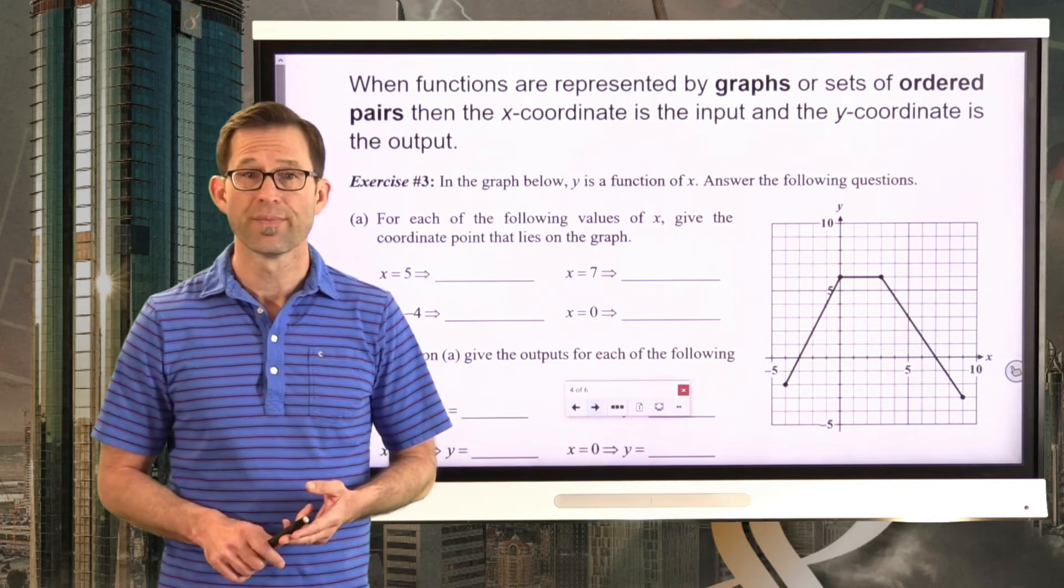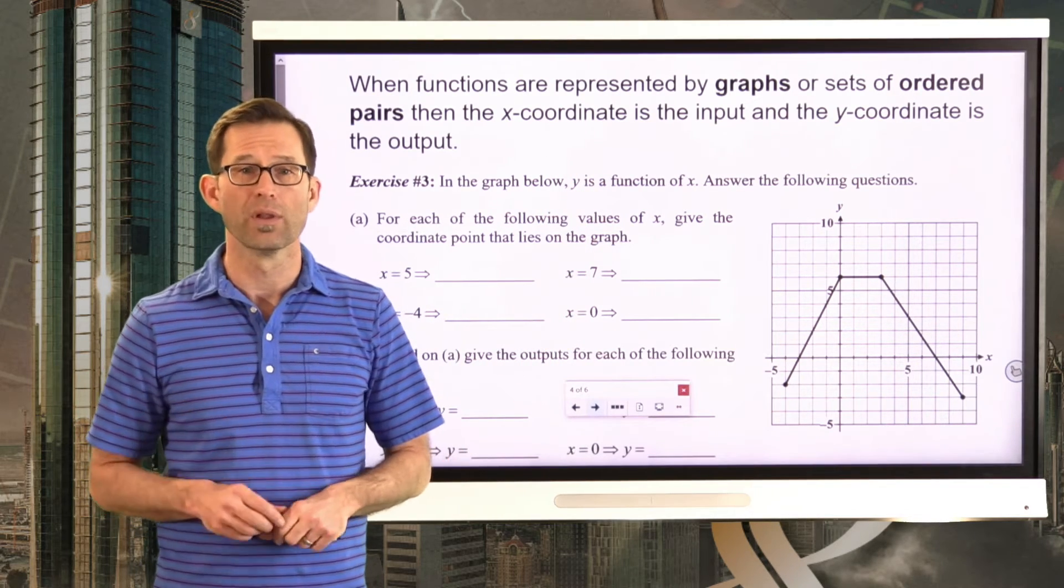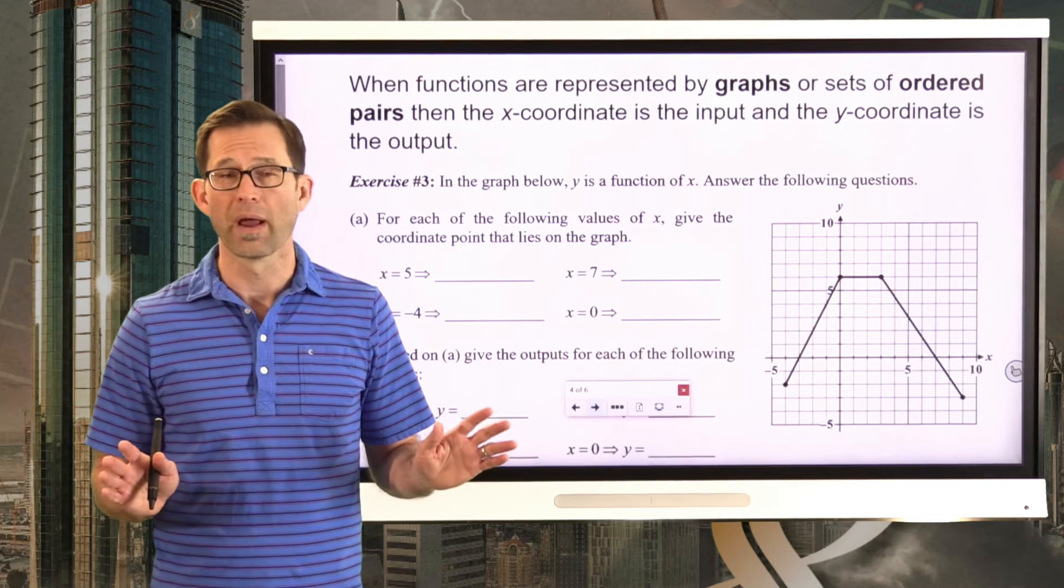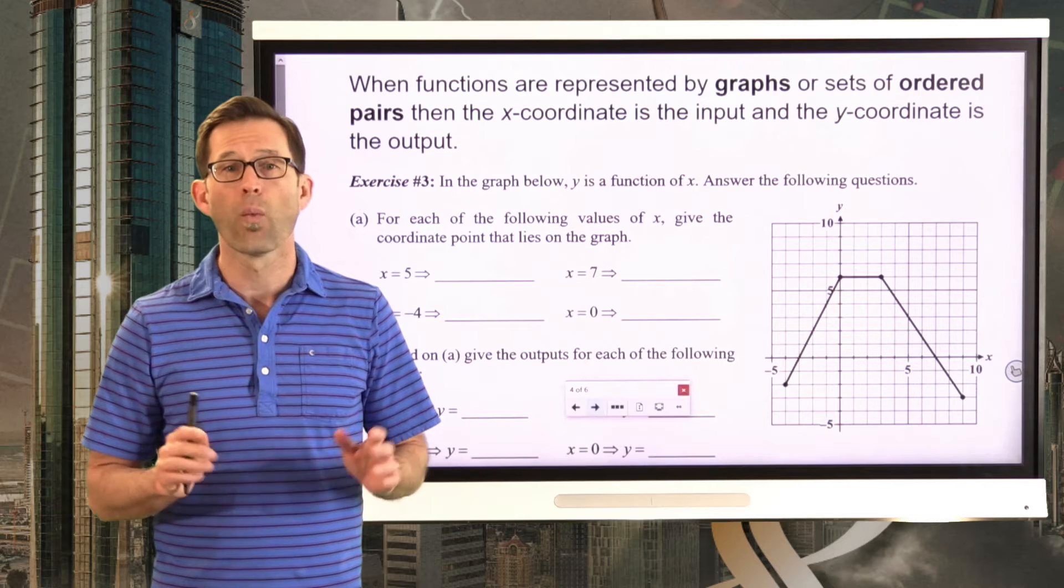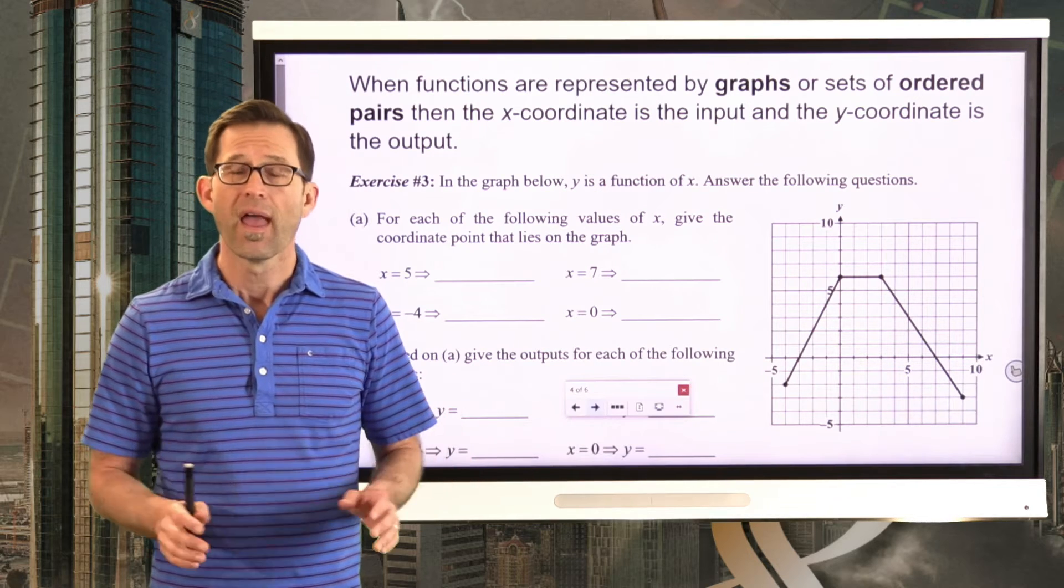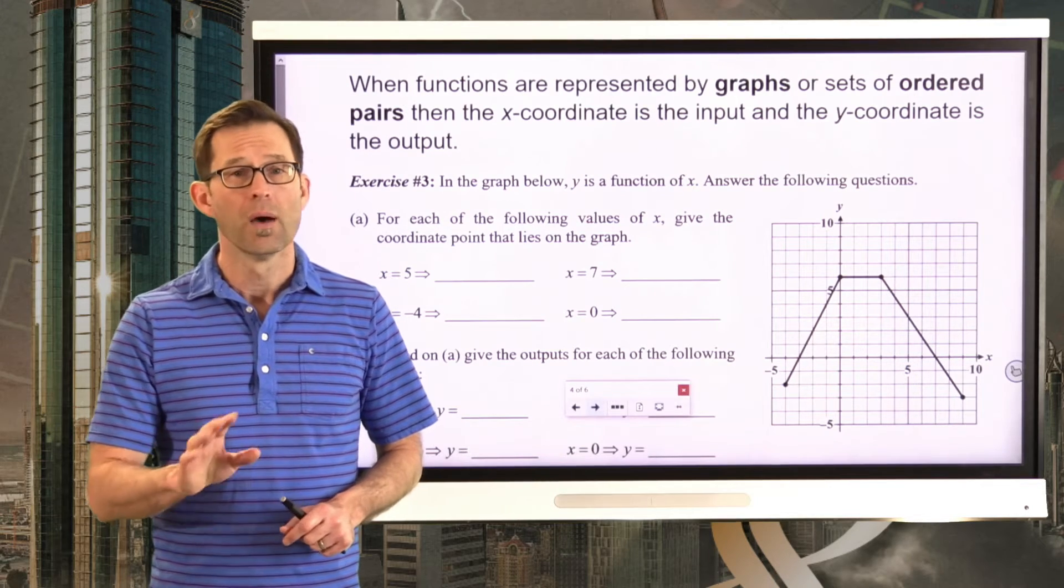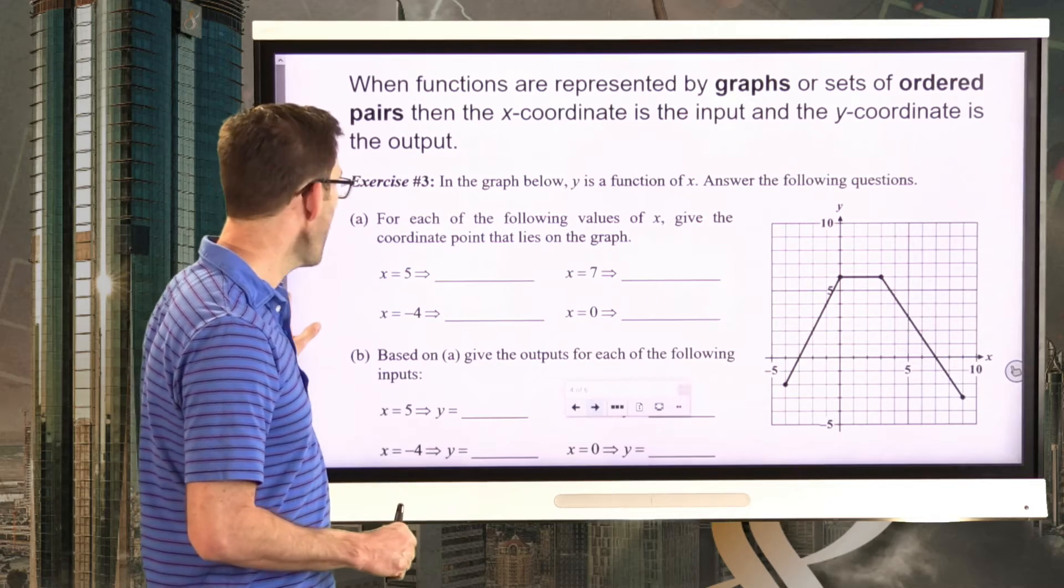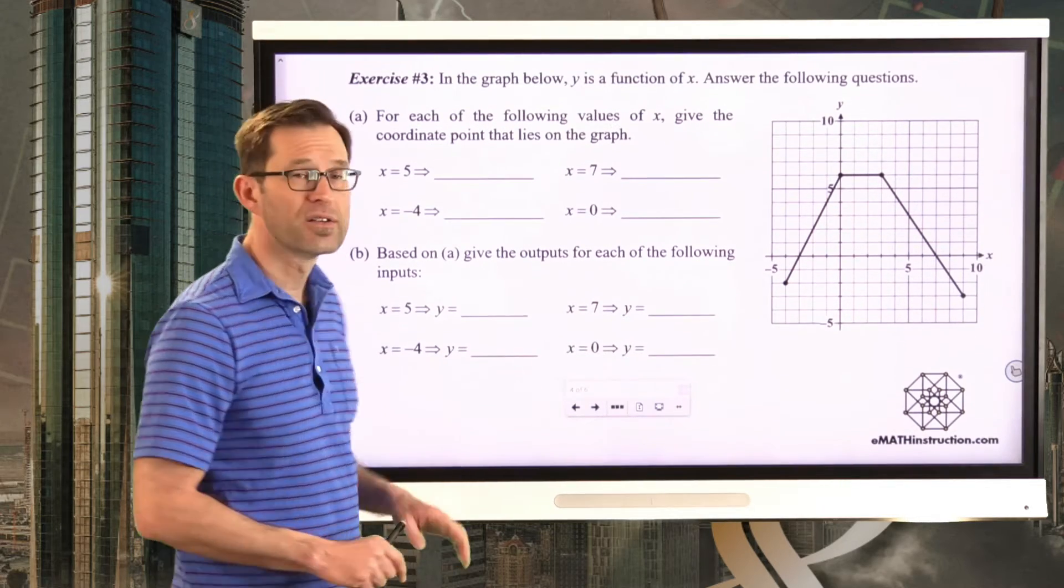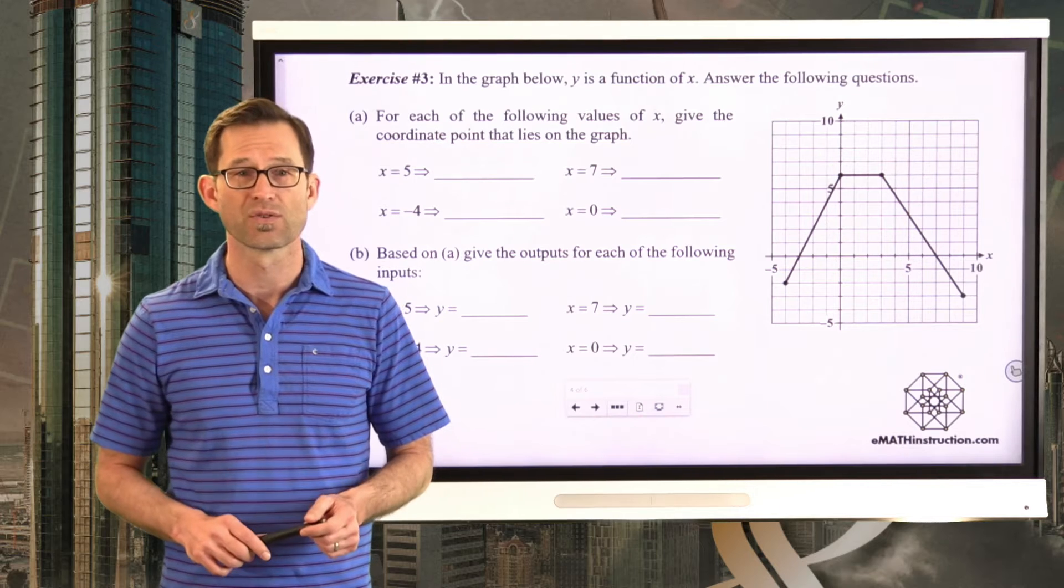All right, so equations. We've seen tables. We've seen equations. Now, when functions are represented by graphs, which is going to be the next thing that we look at, or sets of ordered pairs, either way, the x-coordinate is the input, and the y-coordinate is the output. And again, that's exactly the way it was in the last problem when we had an equation. But with a graph, it's pretty much universal. Let's take a look at how we can use a graph to think about inputs and outputs of a function. Let's take a look at exercise 3.